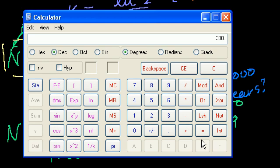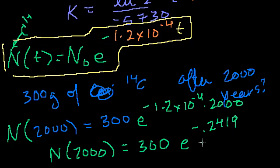Times 300, which is equal to 236 grams. So just like that, using this exponential decay formula, I was able to figure out how much of the carbon I have after kind of an unusual period of time, a non-half-life period of time.